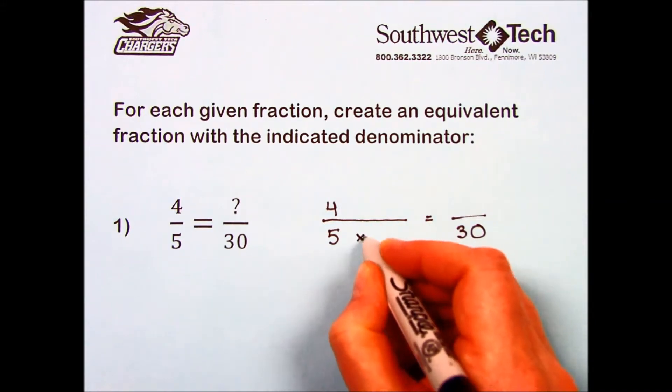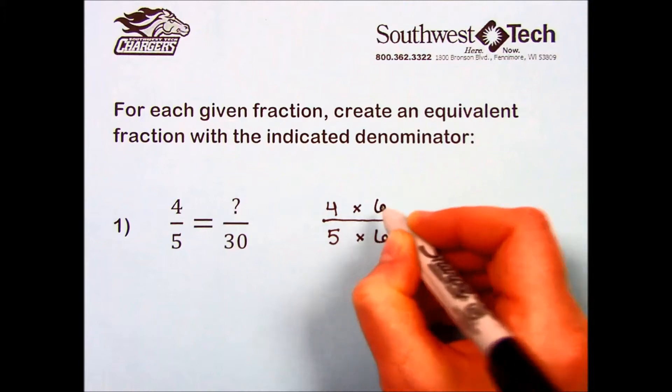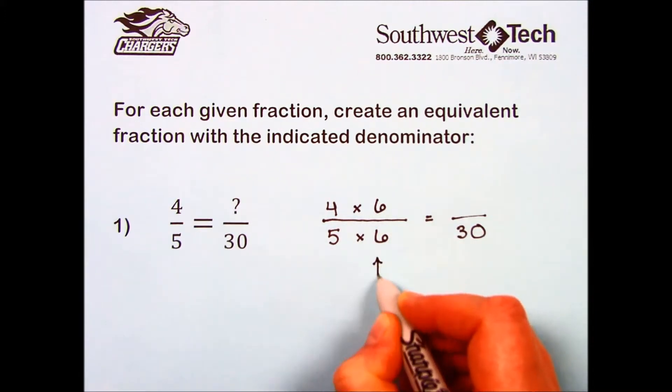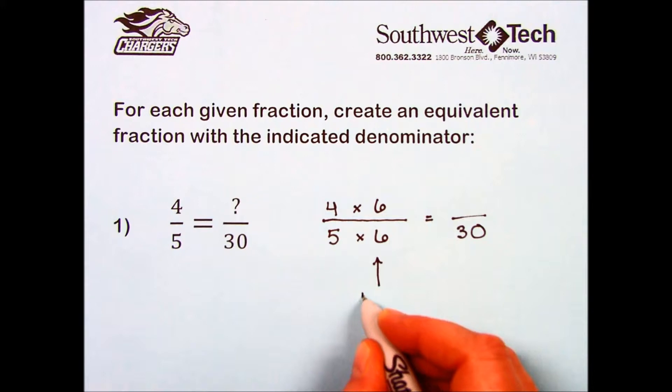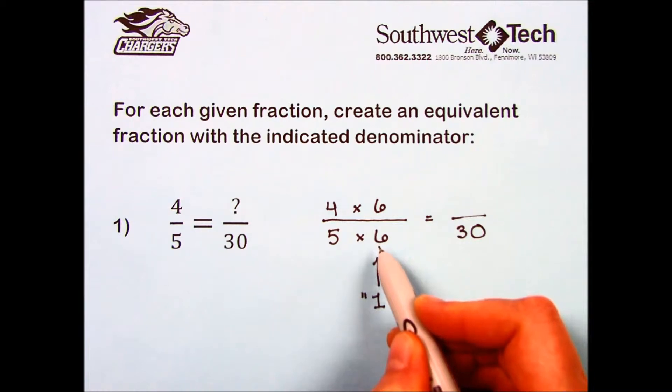And that's 5 times 6. We need to do the same thing to the numerator. Why? Because 6 parts out of 6 is the same as 1 whole, and multiplying our fraction by the number 1 will not change its value.